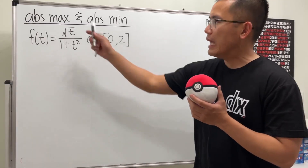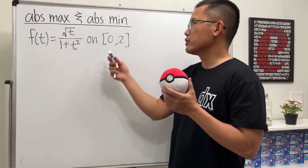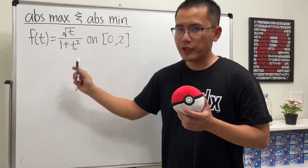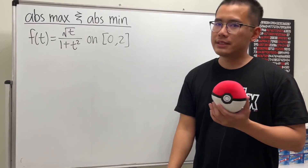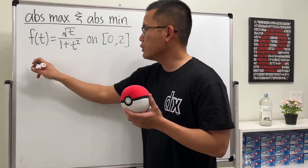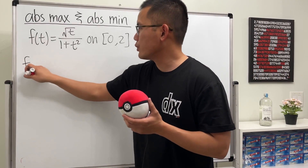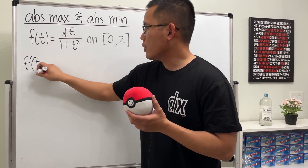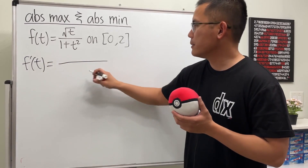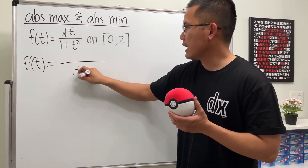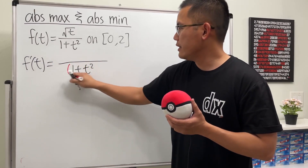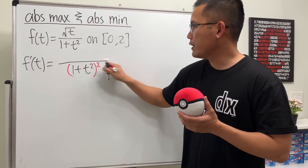We are going to find the absolute max and also the absolute min for this function. Finding the derivative of this, we need to use the quotient rule. So let's go ahead and square the bottom: 1 plus t squared, and then square that.